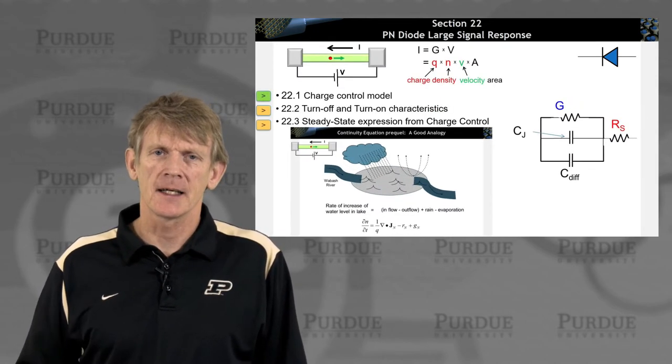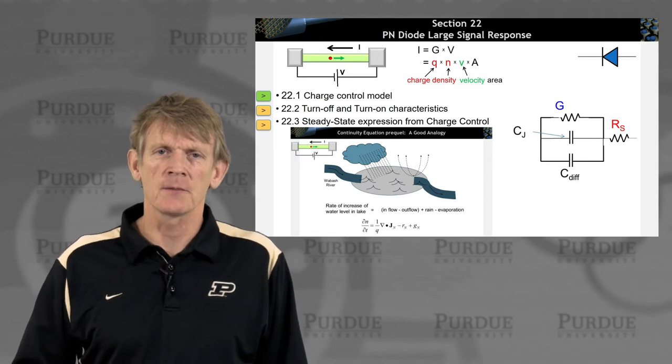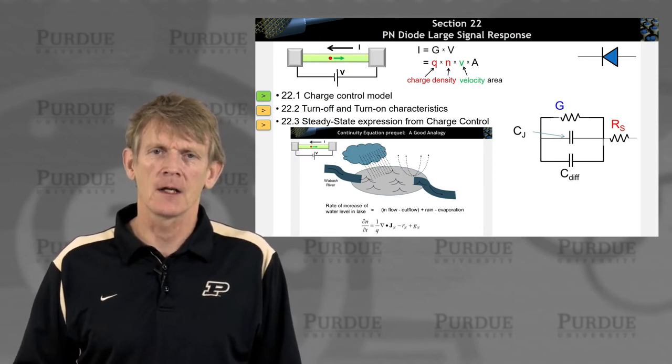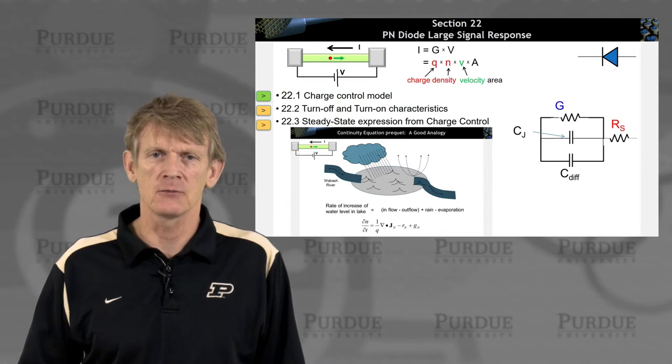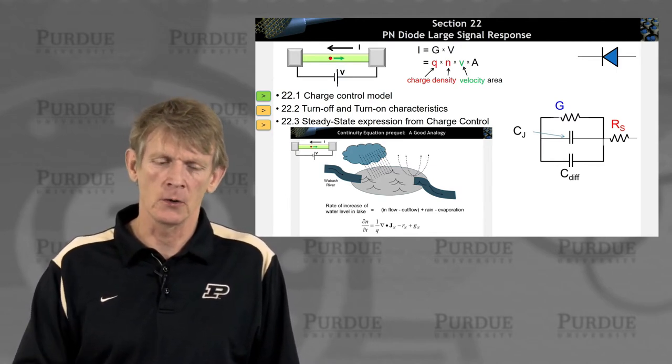So that being said, we're going to introduce something called the charge control model, and then look at on and off characteristics, and then re-derive the PN diode equation from this charge control model.